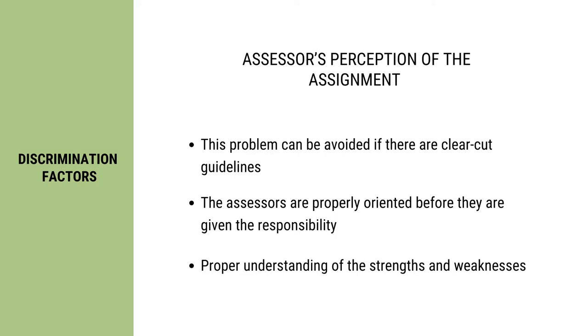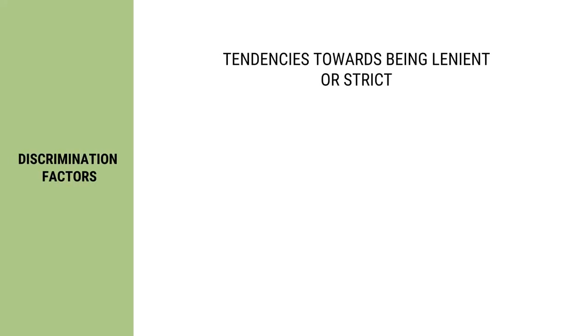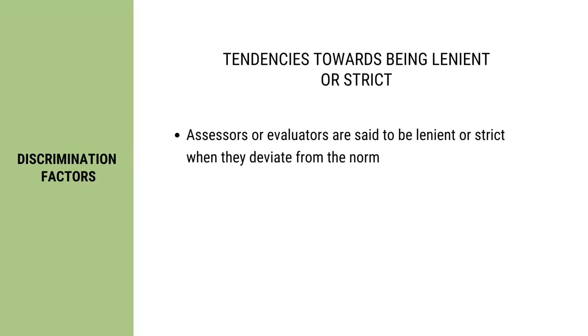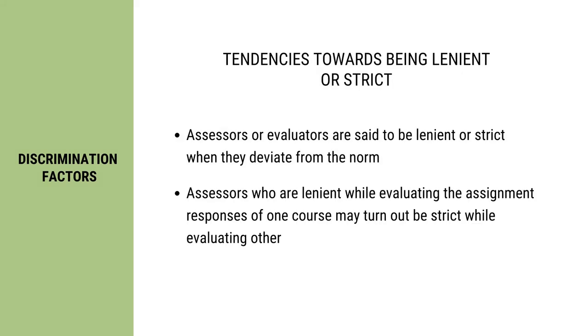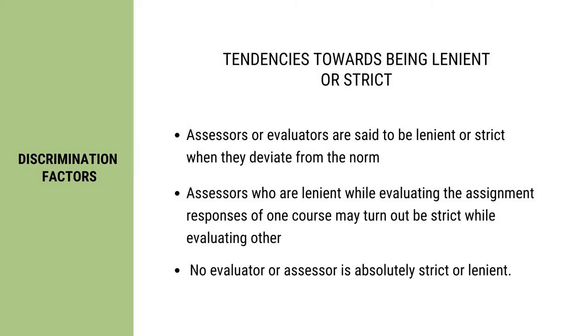A proper understanding of the strengths and weaknesses of an assignment helps the assessor evaluate the assignment responses appropriately. The next discrimination factor is the tendencies towards being lenient or strict. Assessors are considered lenient or strict if they deviate from the standard or norm score expected of the learners. Evaluators who are lenient while assessing one course may turn out to be very strict while evaluating a different course. We can conclude that no evaluators are absolutely strict or lenient.